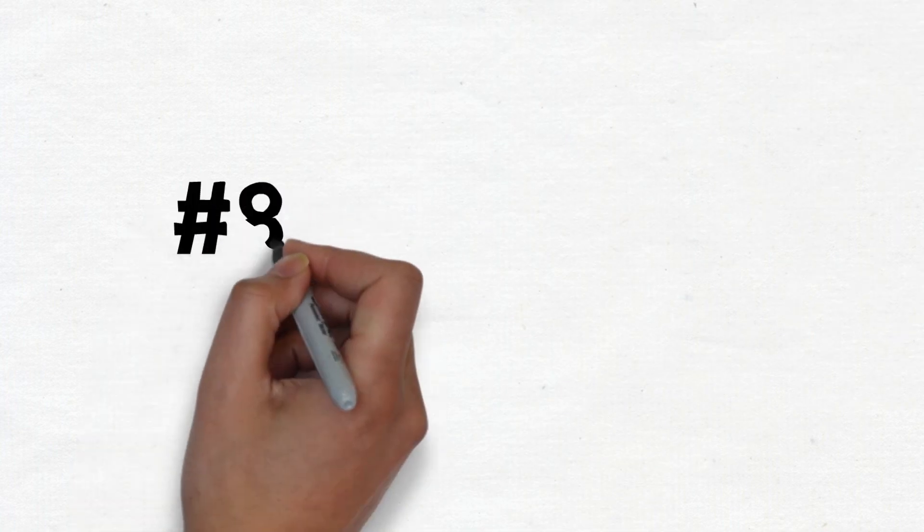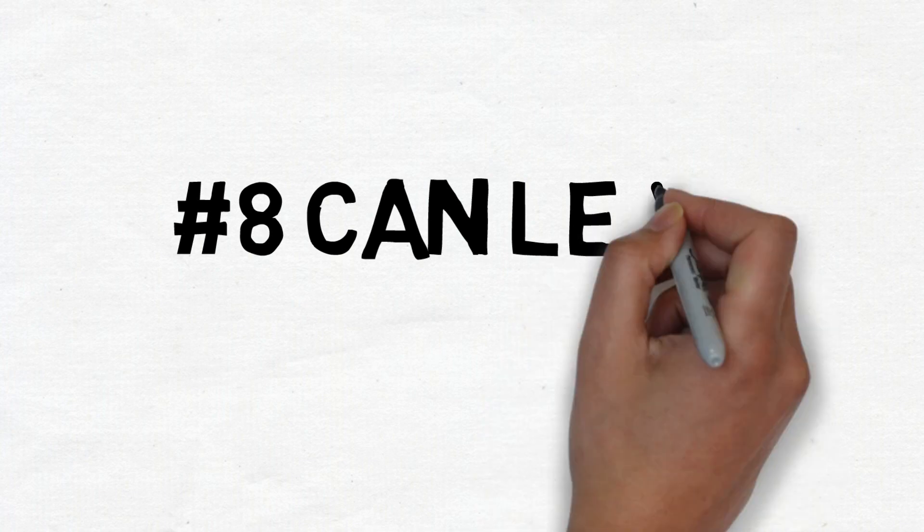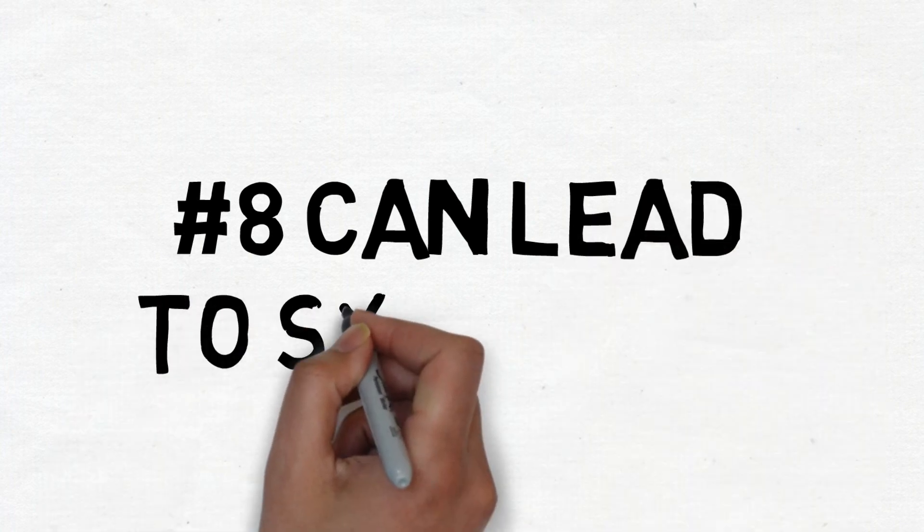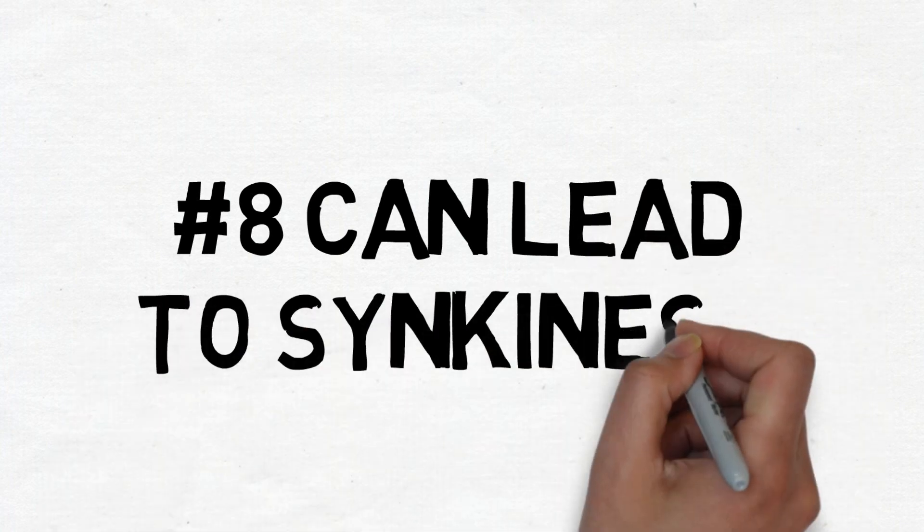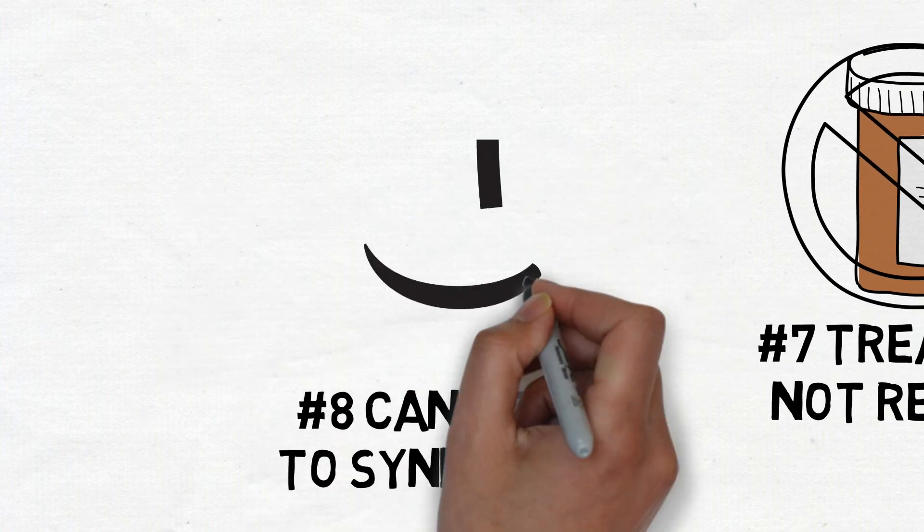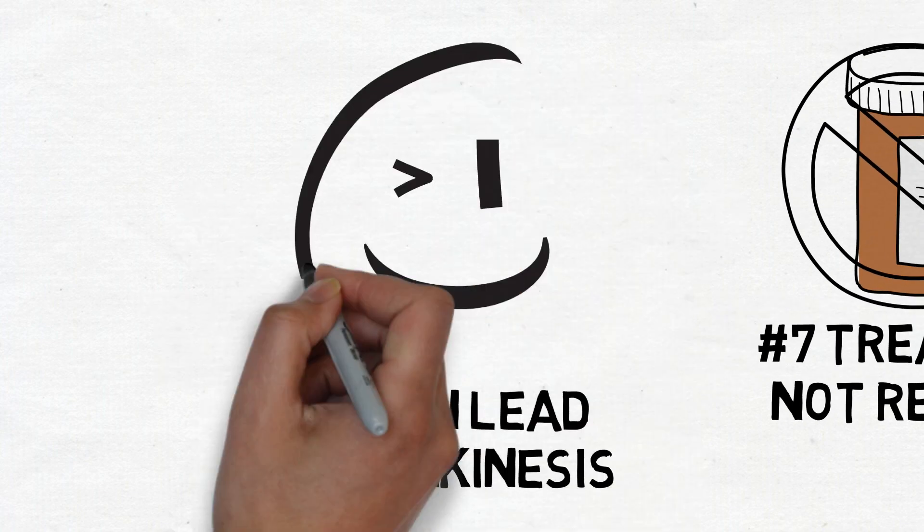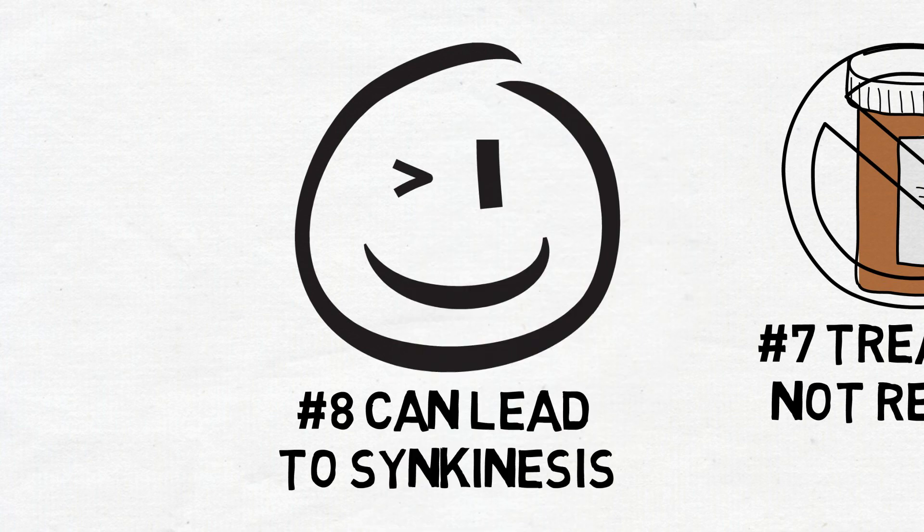Number 8. Bell's Palsy can lead to synkinesis. Synkinesis is a facial disorder where you voluntarily move one part of your face, and another part of your face reacts involuntarily. For example, if whenever you smile, an eye twitches involuntarily, you probably have synkinesis.